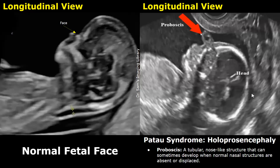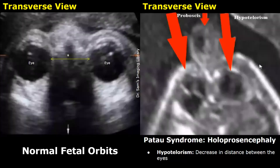Alobar holoprosencephaly is usually associated with severe facial abnormalities. A proboscis is a tubular, nose-like structure that is seen at the forehead. This structure is seen in longitudinal view. In this image, this is the proboscis. It is usually associated with holoprosencephaly. Hypotelorism refers to a decrease in distance between the eyes — they will be seen much nearer to each other. A proboscis is also present in this image. Both of these features are usually seen in holoprosencephaly.